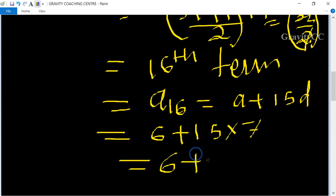6 plus 15 into 7 equal to 6 plus 105 equal to 111 answer.